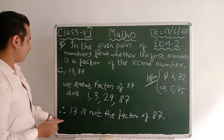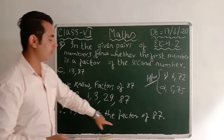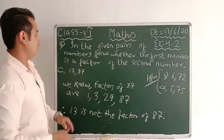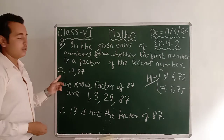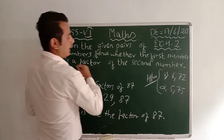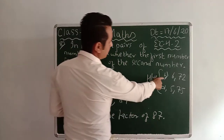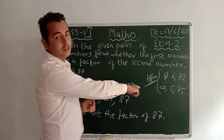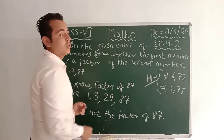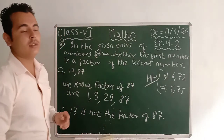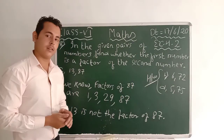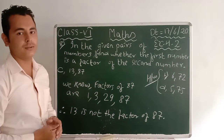So we write: 13 is not the factor of 87. Question c is done. Questions b and d are your homework. That is all for today; we will continue in the next class. Thank you.